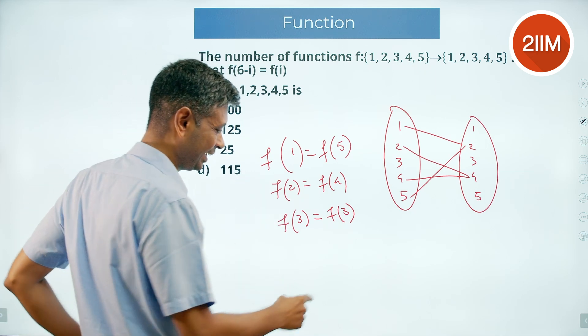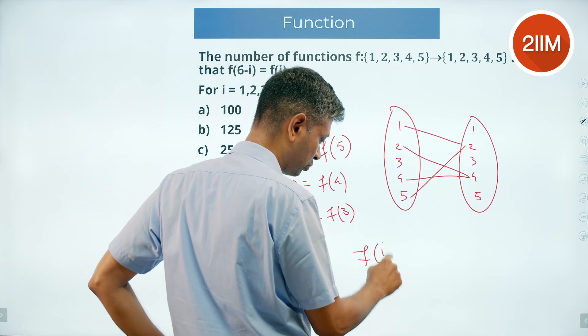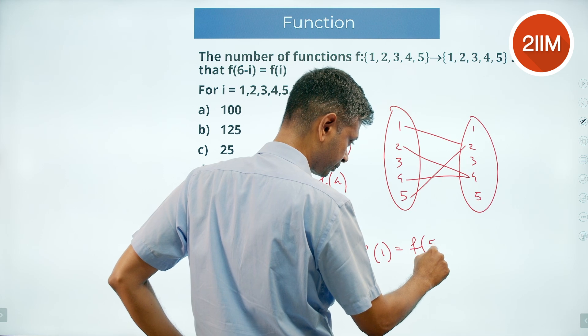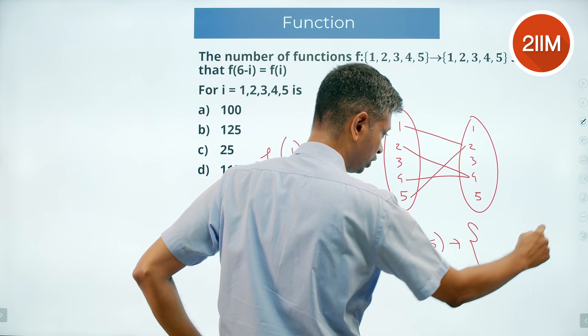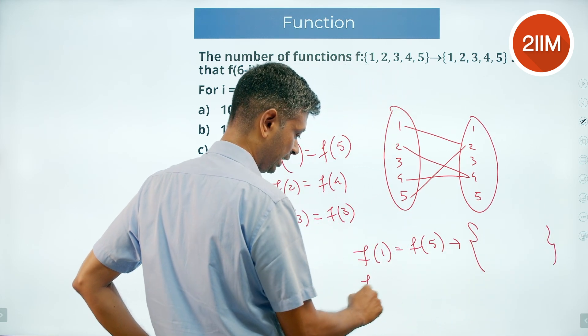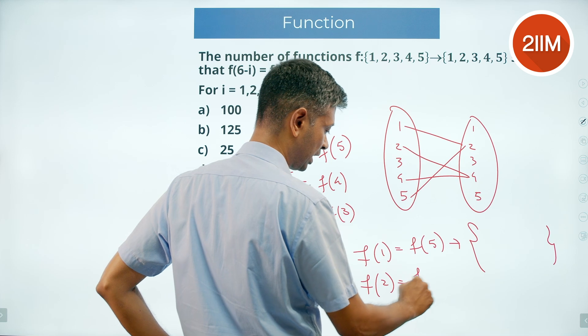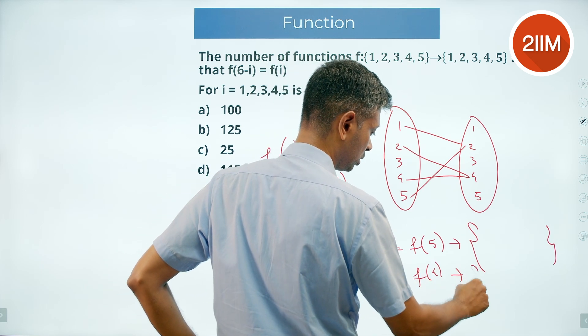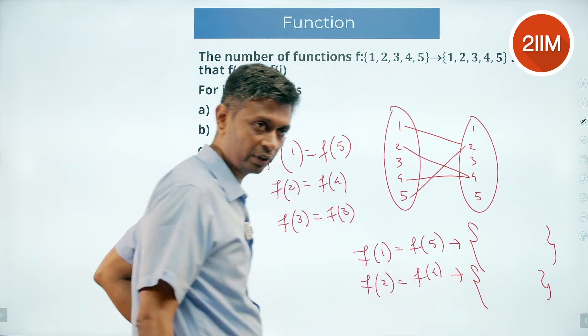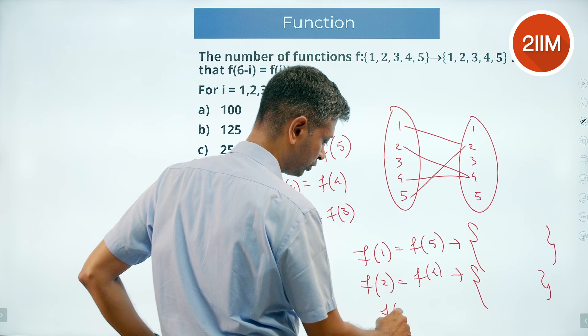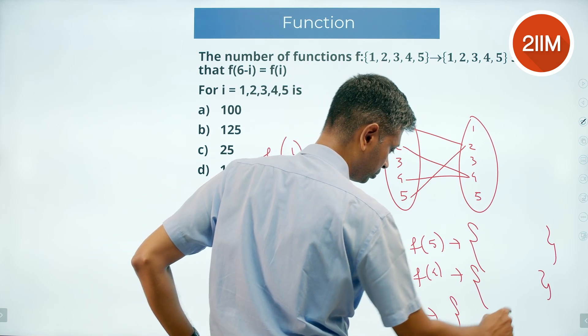And so I can say I will select something for f of 1 and f of 5 from within this 1 to 5. I can select something for f of 2, which will happen to be f of 4, from something in this 1 to 5. Then I will select f of 3 from something from this 1 to 5.